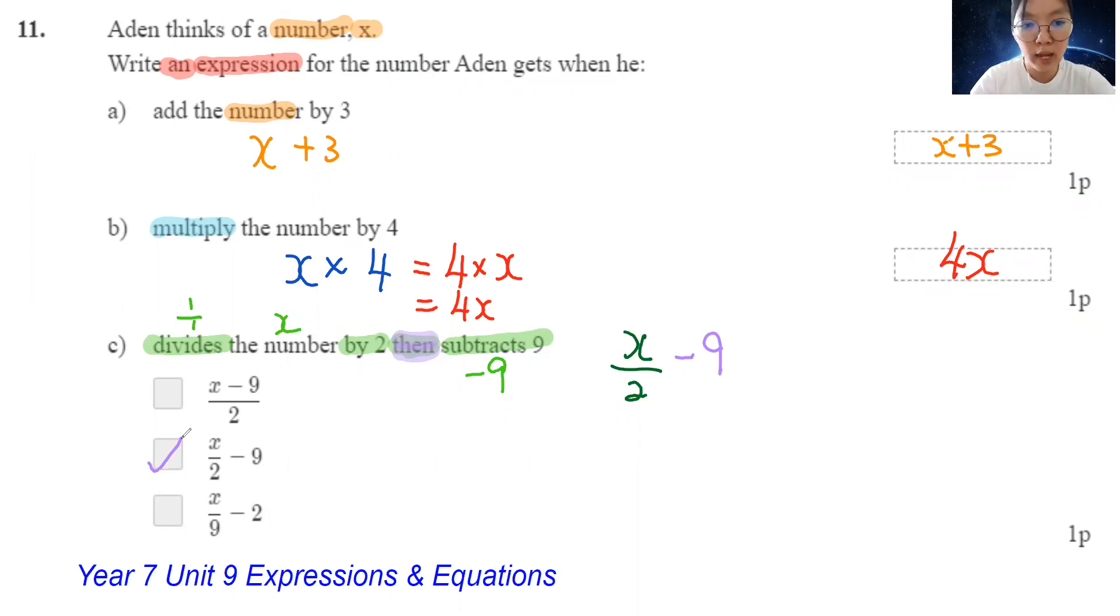Some students put it as X minus 9, divide by 2. How do I phrase this in words? This will come into subtract 9. Subtract 9, because I'm going to take the X. Subtract 9 by the number.